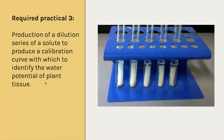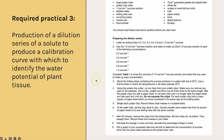Required practical three is titled the production of a dilution series of a solute to produce a calibration curve, so we've got two skills: a dilution series, producing a calibration curve, and then being able to identify the water potential of the plant tissue. This is the method from the AQA handbook, but they specify this doesn't mean it will be on the exam — it's a way to give you a general idea of typical equipment and key points you could be questioned on.